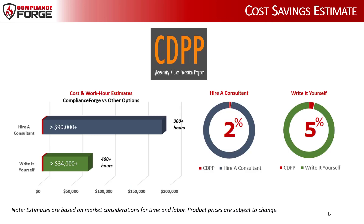From a cost comparison perspective, for your internal staff to generate comparable documentation to the CDPP, it would take them an estimated 400 internal staff hours, which equates to a cost of approximately $34,000 in staff-related expenses, and take about four to eight months of development time. If you hire a consultant to generate equivalent documentation, it would take them an estimated 300 consultant hours, which equates to a cost of approximately $90,000, and would take about three to six months. The CDPP is approximately 2% of the cost of a consultant and about 5% of the cost of internal staff time.